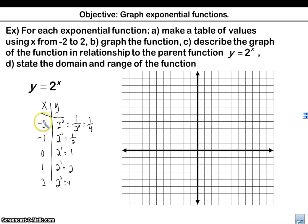Let's go and plot these points. So negative 2, 1 fourth is about right there. Negative 1, 1 half is about right there. 0, 1; 1, 2; and 2, 4. You see this is curving upwards, and this is going to approach and go down toward the horizontal asymptote right there. So this is our picture. It says to describe the graph of the function in relation to the parent graph — well, this is the parent graph, y equals 2 to the x, so it's the same graph.